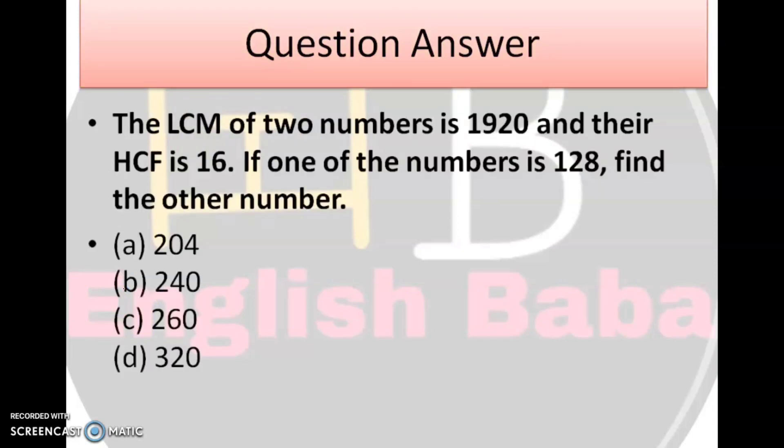Next question. LCM of 2 numbers is 1920, and their HCF is 16. If one of the numbers is 128, find the other number. Hamen LCM diya hai, HCF diya hai, aur ek number diya hai. Ab hamen kya batana hai? Doosra number hamen pata hai, LCM into HCF is equal to A into B. Formula mein lagaiye digits, LCM into, LCM hai 1920, HCF hai hamara 16. Suppose A is 128, we have to find the B. Your correct answer is option number B, 240.